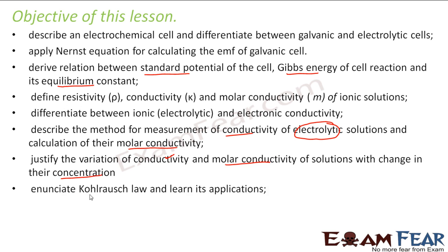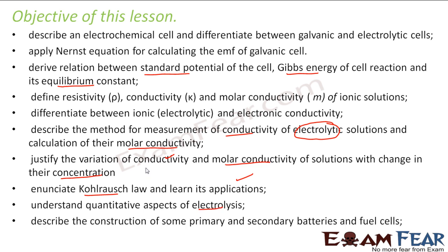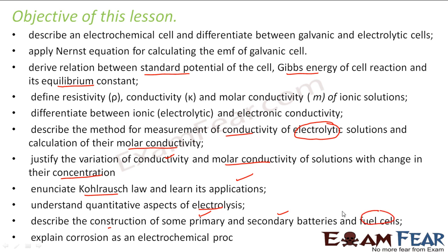We'll enunciate Kohlrausch's law and learn its applications. We'll understand the aspects of electrolysis and describe the construction of primary and secondary batteries and fuel cells. Finally, we'll explain corrosion as an electrochemical process. Those are the topics we'll study in this chapter.